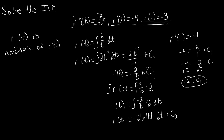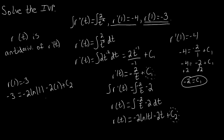So now we have a general anti-derivative for r of t. Just like we did for r prime, we're going to use our initial value condition to solve for c2. We have r of 1 equals negative 3, so negative 3 equals negative 2 times the natural log of the absolute value of 1 minus 2 times 1 plus c2. The natural log of 1 is 0, so negative 2 times 0 is 0, giving us negative 3 equals negative 2 plus c2, so c2 equals negative 1.